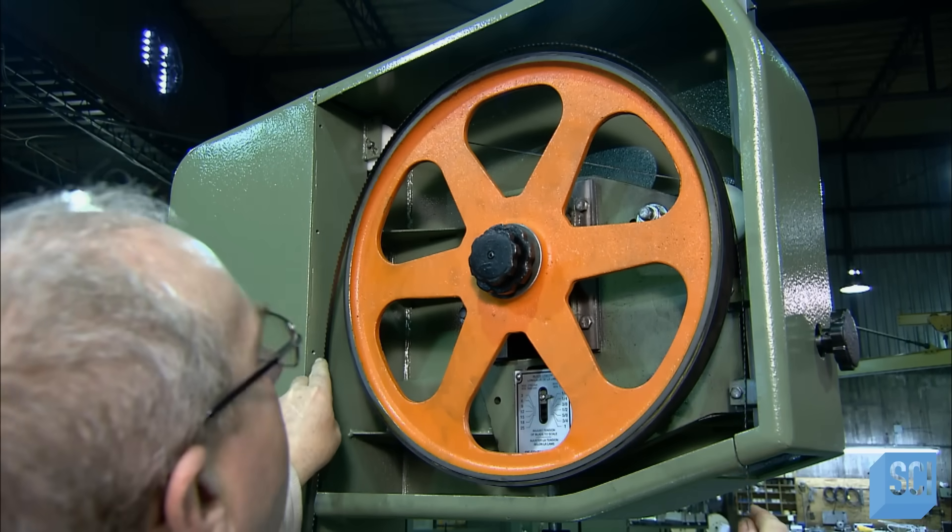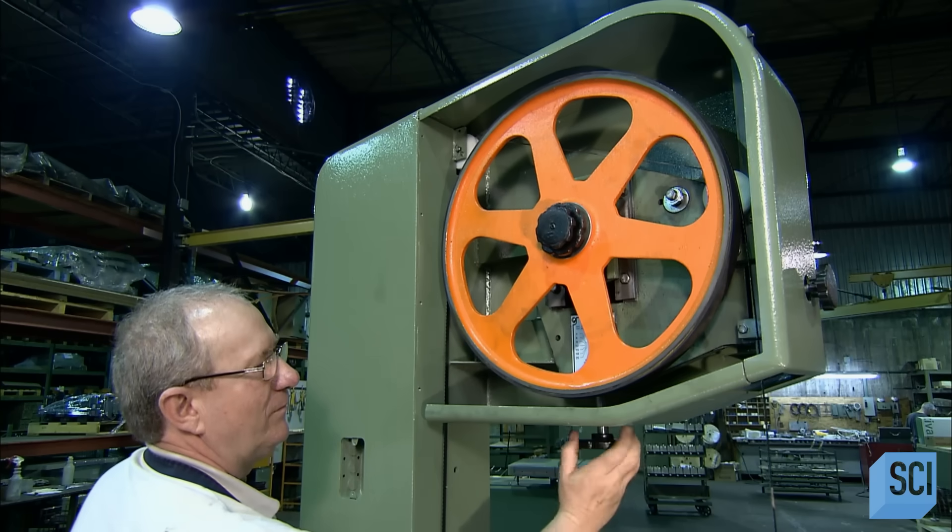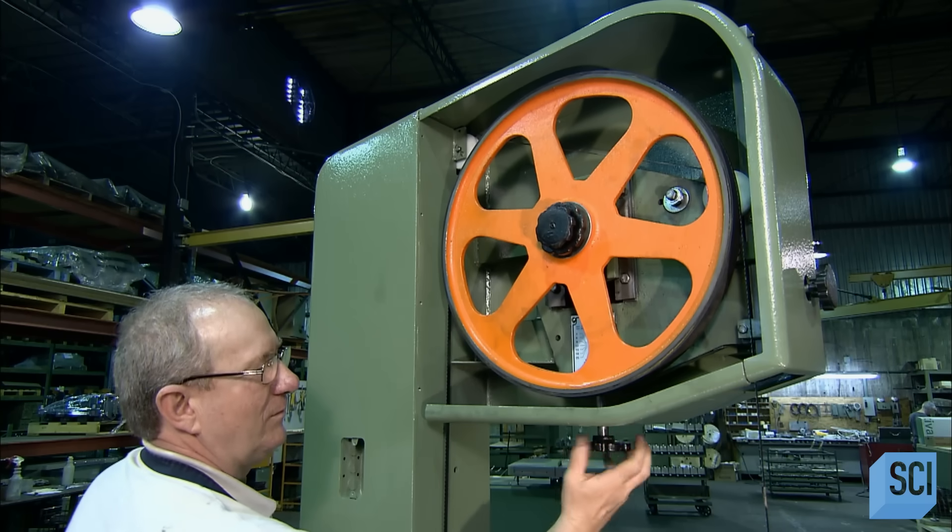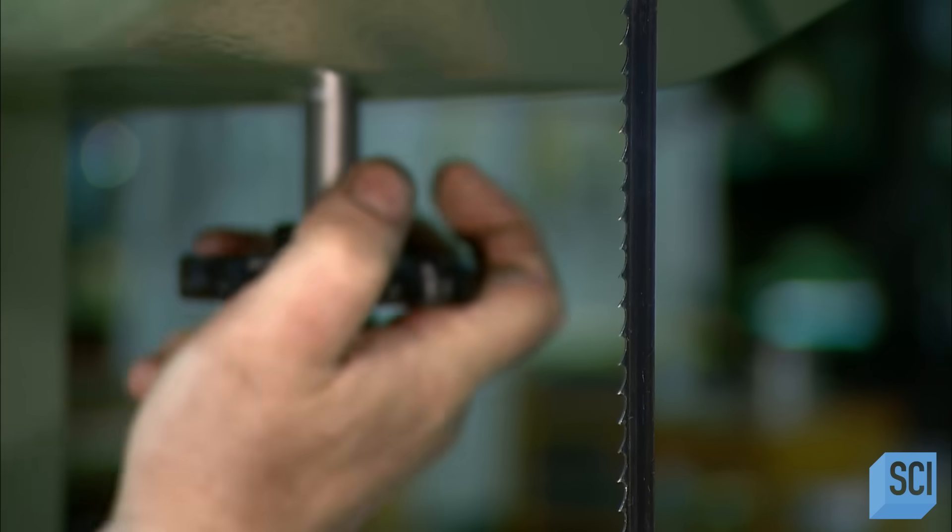workers remove the jig and loop the steel saw blade around the two wheels. They adjust the blade to the correct tautness by simply setting the tension gauge to the width of the blade.